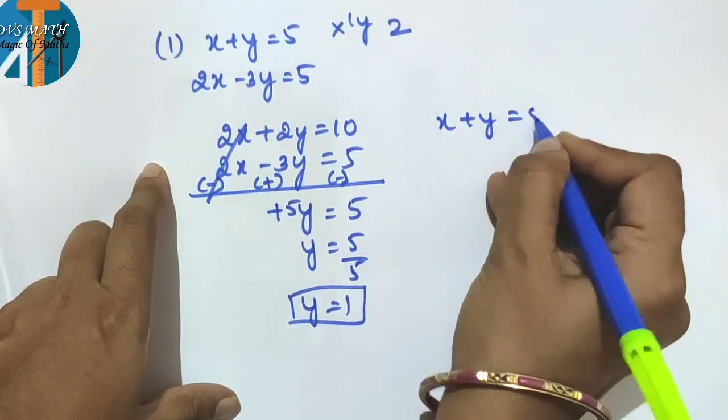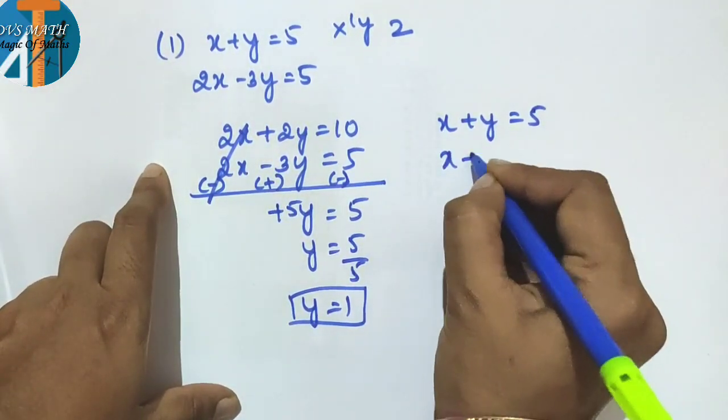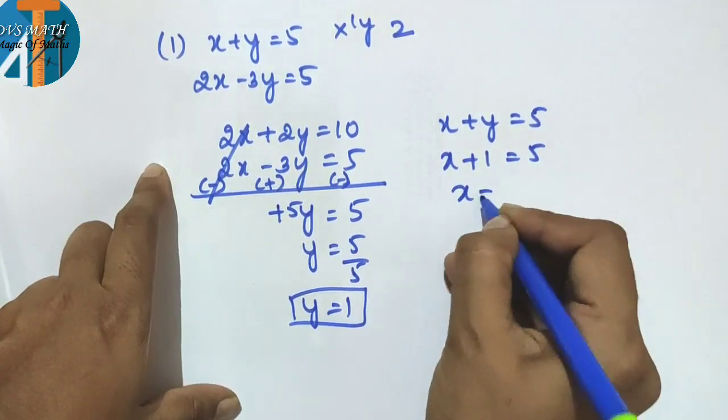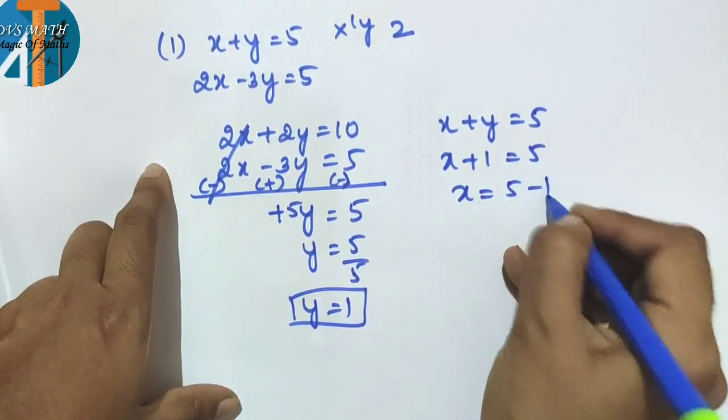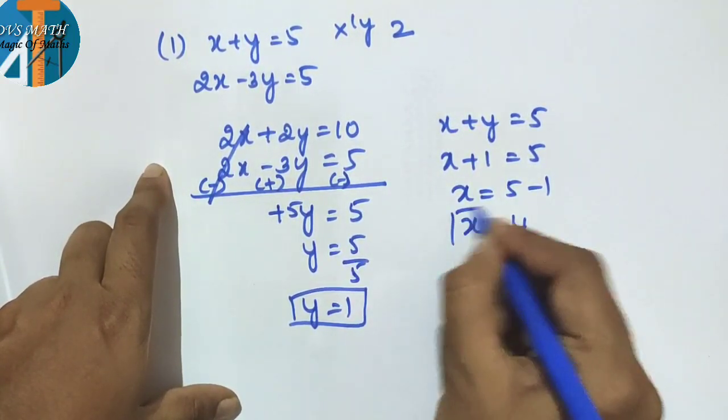Substitute y = 1 into x plus y = 5: x plus 1 = 5, so x = 5 minus 1, x is equal to 4.